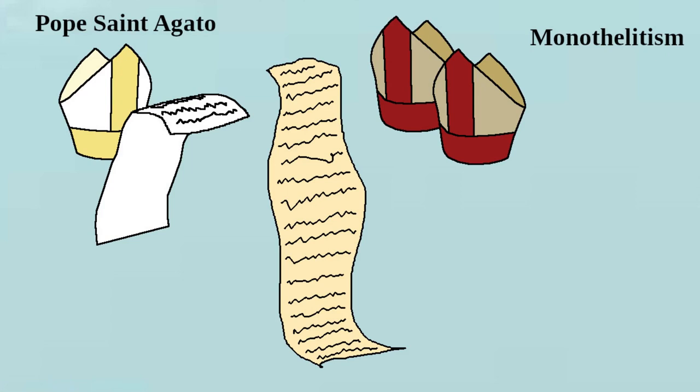Specifically, the heresy of monothelitism, the position that Jesus had only one will, not two, a human will and a divine will. Their assessment addressed the main errors of monothelitism and condemned it as a heresy.